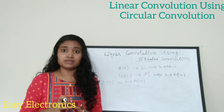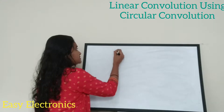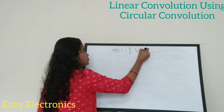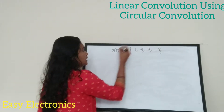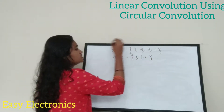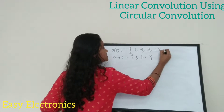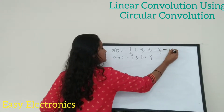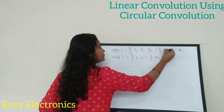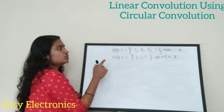We are going to do an example to find the result of linear convolution using circular convolution. Let my first sequence x of n equal to {1, 2, 3, 1} and my second sequence h of n equal to {1, 1, 1}. The length of the first sequence is L equal to 4, and the length of the second sequence m is equal to 3. So your L is 4 and m is 3.